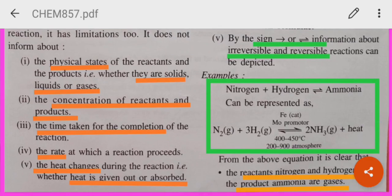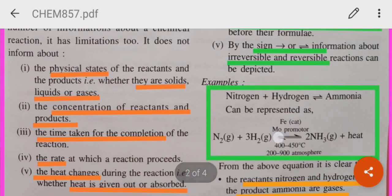Now, if we write the information in details, what we can write? Nitrogen is a gas which reacts with hydrogen which is also a gas. The reversible sign shows that it is a reversible reaction. Iron acts as a catalyst. A catalyst is a chemical compound which increases or decreases the rate of a chemical reaction, and here actually it increases the rate of a chemical reaction. Molybdenum acts as a promoter. A promoter is a substance which increases the efficiency of a catalyst. What is the temperature? 400 to 450 degree Celsius. And the pressure is 200 to 900 atmosphere.